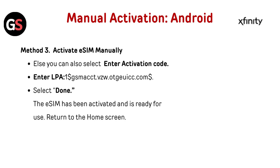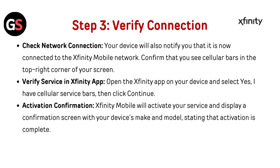Step 4: Verify connection. Return to the home screen and check your network connection. Your device will notify you that it is now connected to the Xfinity Mobile network. Confirm that you see cellular bars in the top right corner of the screen. Open the Xfinity app on your device and select Yes, I have cellular service bars, then click Continue. Xfinity Mobile will activate your service and display a confirmation screen with your device's make and model, stating that activation is complete.